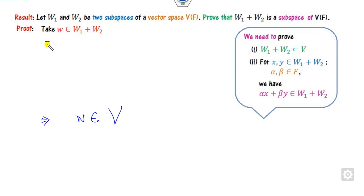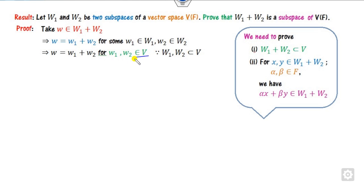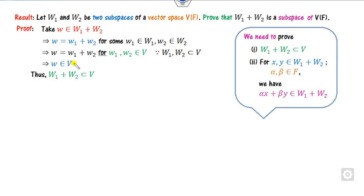By applying the definition of the linear sum, we can write it as shown. Since w1 and w2 are subspaces of v, any element is also a part of v because w1 and w2 are subsets of v. So v plus v is nothing but v, and therefore the first property is satisfied.